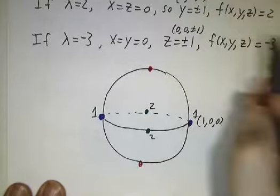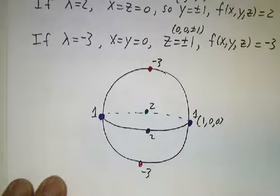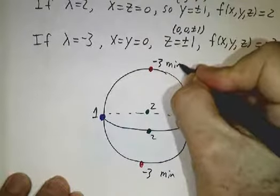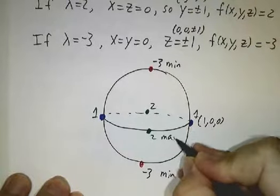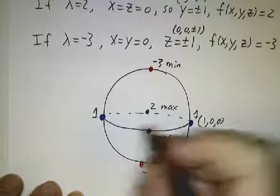And at 0, 0, 1, the function value is negative 3. So this is our minimum, this is our maximum, and these are saddle points.